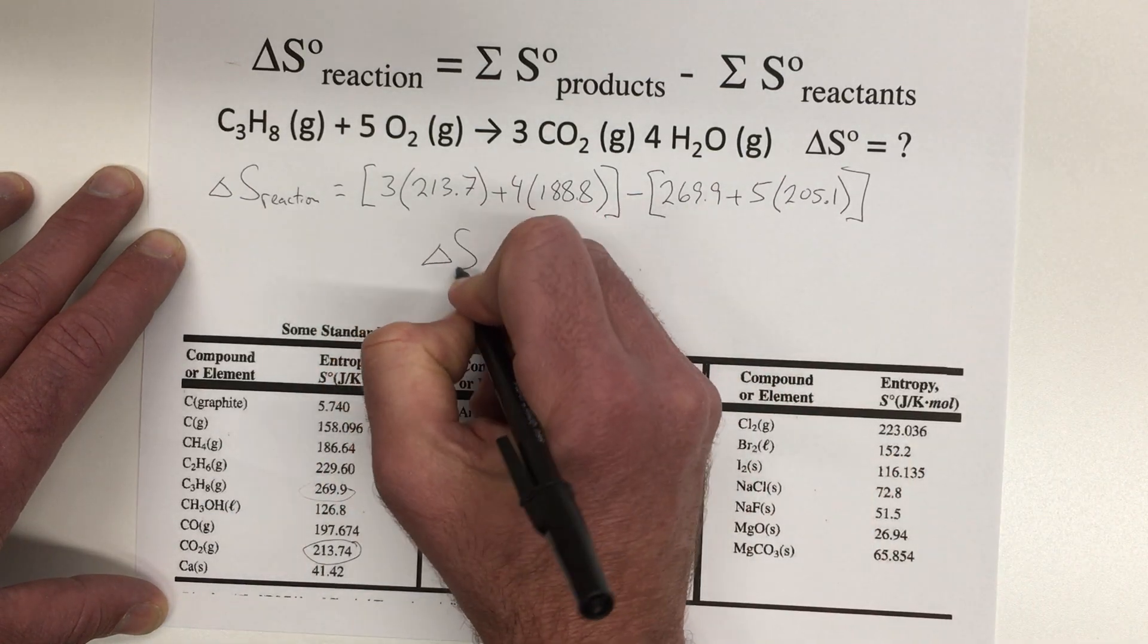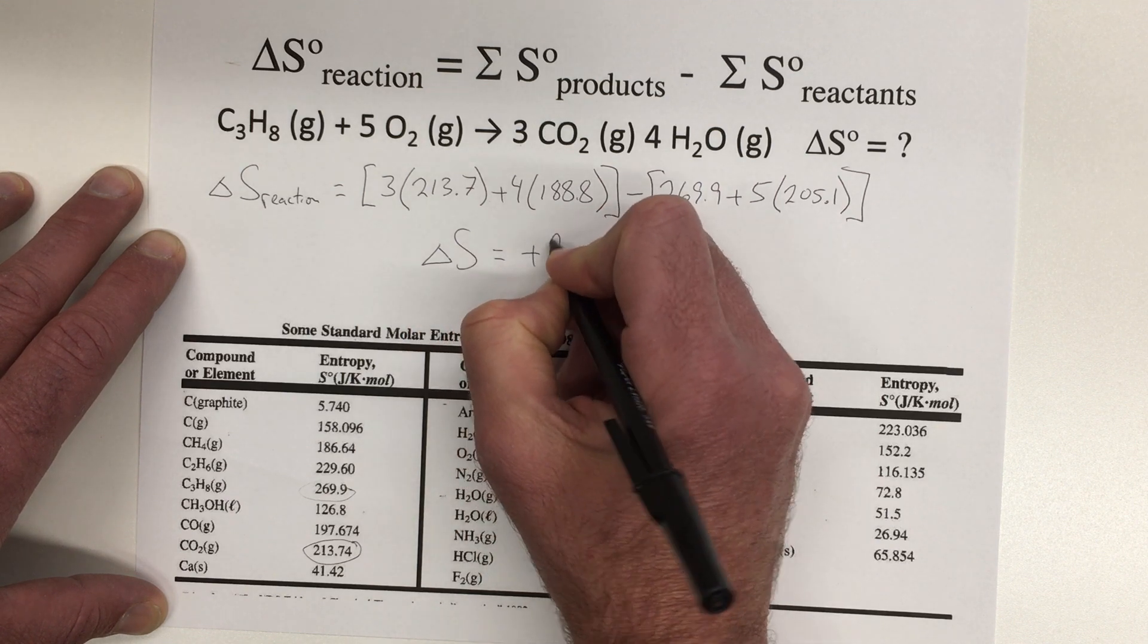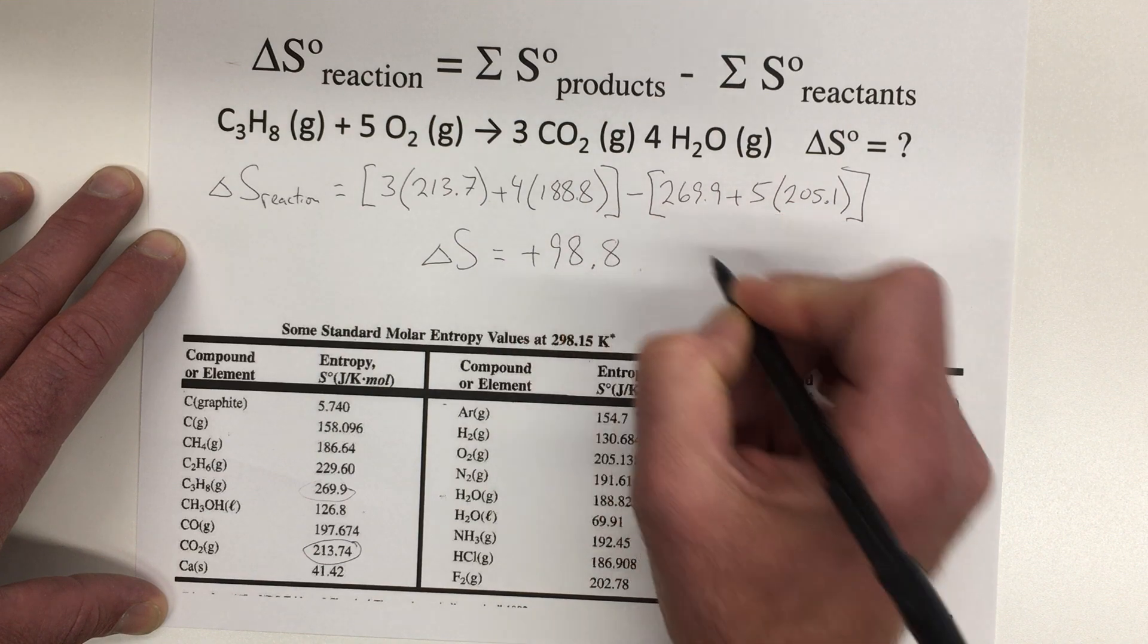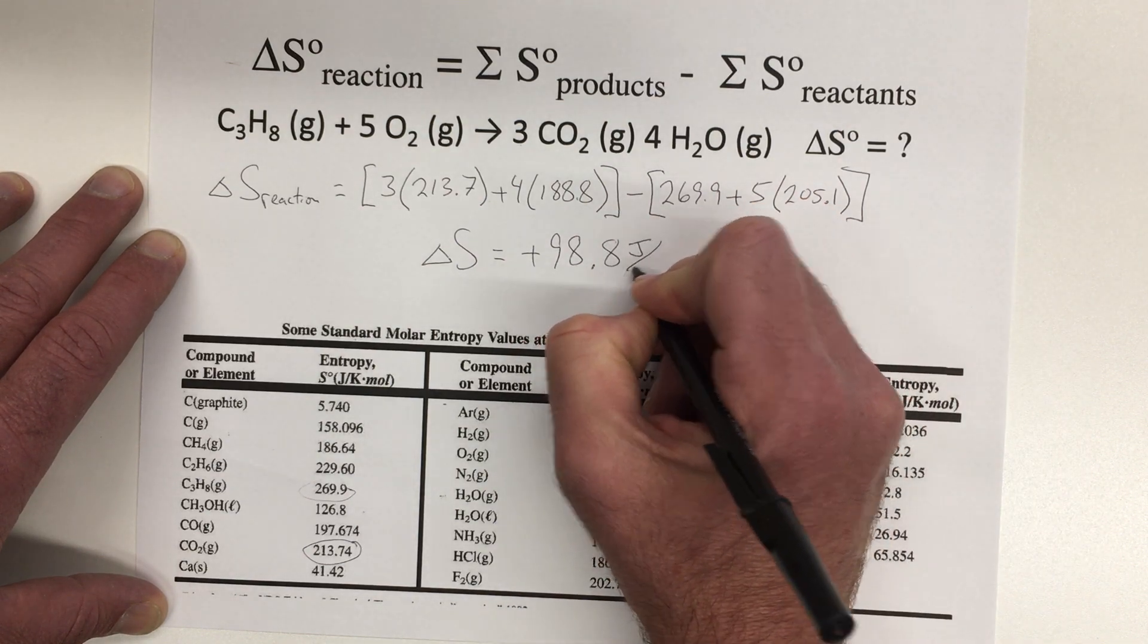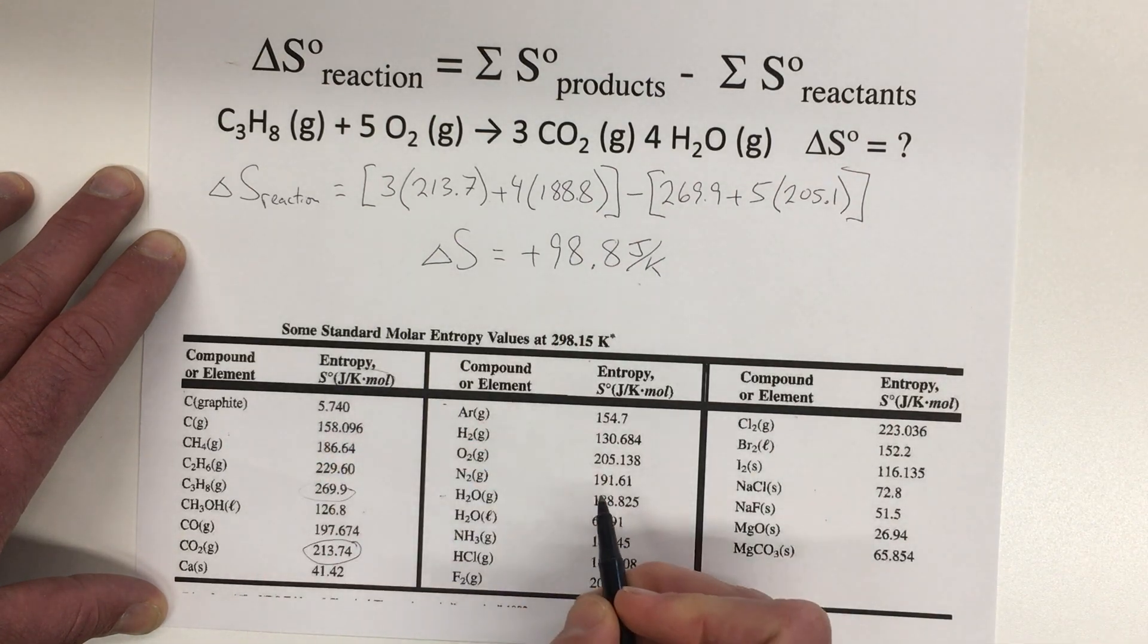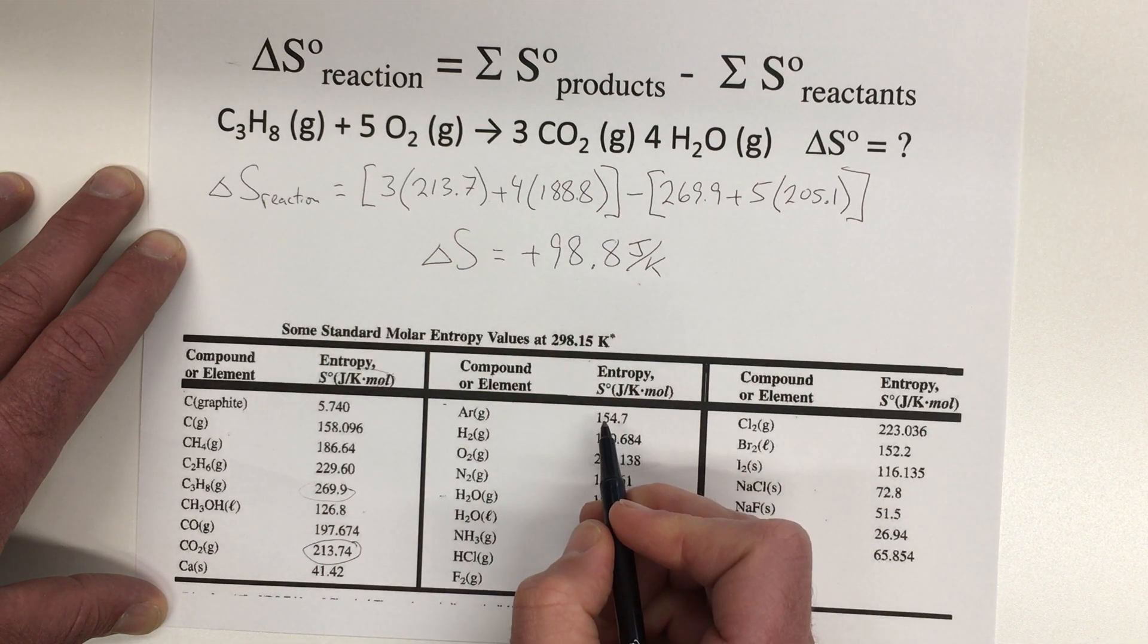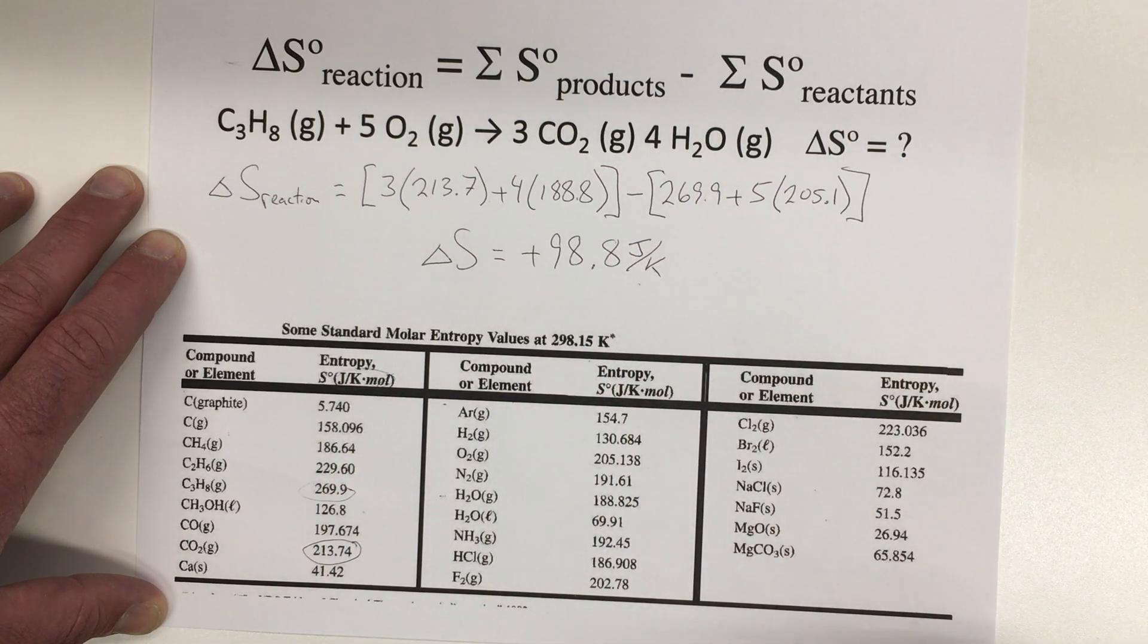And we calculate this, and this comes out to be positive 98.8. And the units are going to be joules per degree Kelvin. So here are the units of the standard molar entropies that we looked up. The moles will cancel out when we multiply it by the moles of each reactant or product, and then the units that we get at the end will be joules per degree Kelvin.